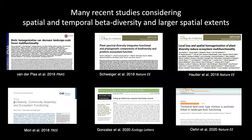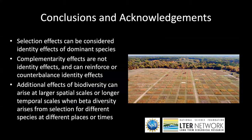There's been a flurry of recent papers considering effects of spatial and temporal beta diversity on ecosystem functioning and also considering larger spatial extents, including some exciting remote sensing work. I hear of many exciting remote sensing projects at many LTER sites and suspect this will increasingly become a strength of the network in the coming years. I'll conclude by reiterating that selection effects can be considered identity effects of dominant species. Complementarity effects are also common — they're not identity effects and they can reinforce or counterbalance identity effects depending on which species are being selected for and which ones are being lost. Additional effects of biodiversity can arise at larger scales when beta diversity arises from selection for different species at different places or times. Thus, even when selection effects are important, diversity can also be important, though likely at larger spatial or longer temporal scales. I'd like to acknowledge the many researchers across the LTER network for providing the insights highlighted in this talk.